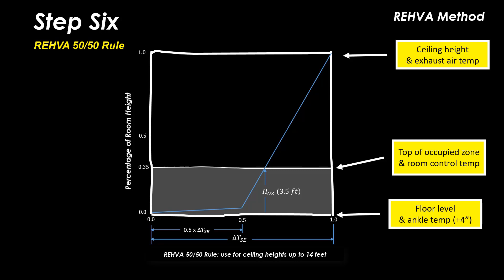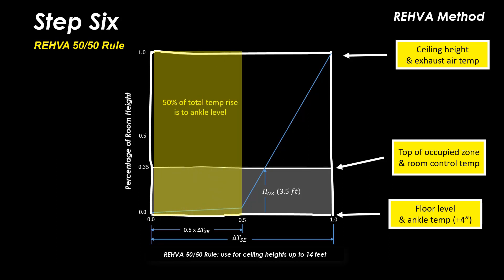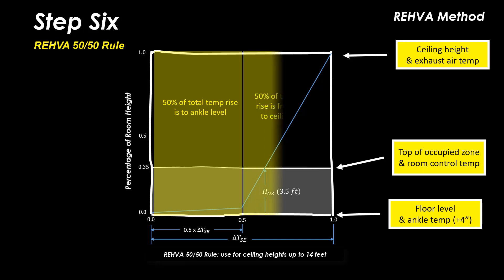The 50-50 rule estimates that the space vertical temperature gradient makes up half of the total supply return temperature differential between the supply outlet and ankle level, and the remaining half between the ankle level and ceiling.